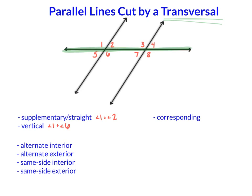Alternate means one on each side of the transversal. Interior means in between those parallel lines — and the exteriors are on the outside of the parallel lines. So quickly reviewing: alternate interior would be like angles 2 and 7, or 3 and 6. Alternate exterior would be like 1 and 8, or 4 and 5. Same-side interior would be like 2 and 3, or 6 and 7. Same-side exterior would be like 1 and 4, or 5 and 8.